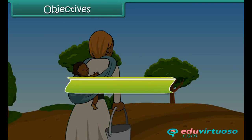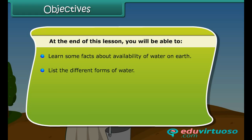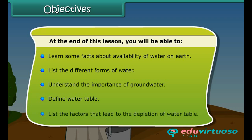At the end of this lesson, you will be able to: learn some facts about the availability of water on earth, list the different forms of water, understand the importance of groundwater, define water table, and list the factors that lead to the depletion of the water table.